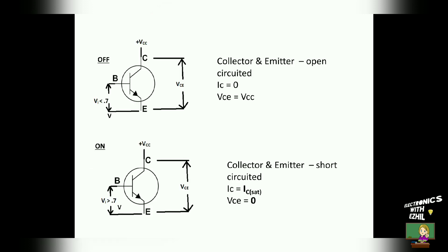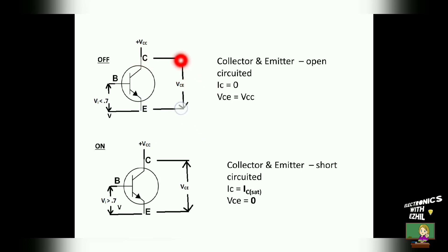To understand the operation of the bistable multivibrator better, we will see the switching properties of the transistor. When the input voltage applied between the base and emitter junction of the transistor is less than the cut-in voltage — which is 0.7 volt for silicon and 0.34 volt for germanium — then the transistor goes to off state, meaning the collector and emitter terminals are getting open circuited. So no current will be flowing through the collector terminal, which is equal to 0.